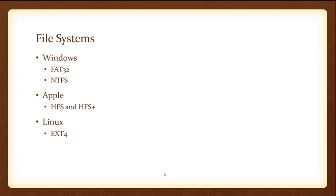Your computer has different file systems depending on your OS. Windows used to use FAT32 — an older version that did not offer advanced attributes. Now most Windows computers use NTFS, which is the current version and does offer advanced attributes. For Apple, it's called HFS and HFS Plus, and for Linux it's called ext4.